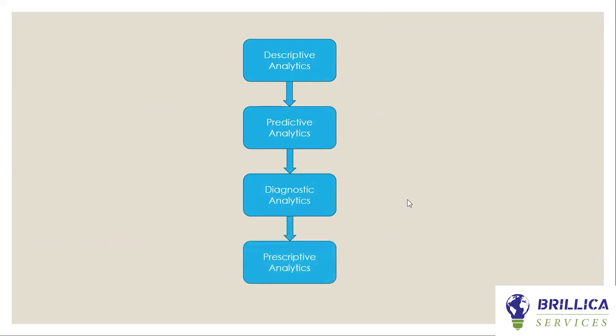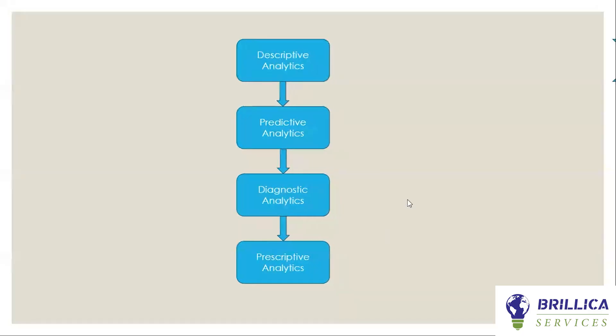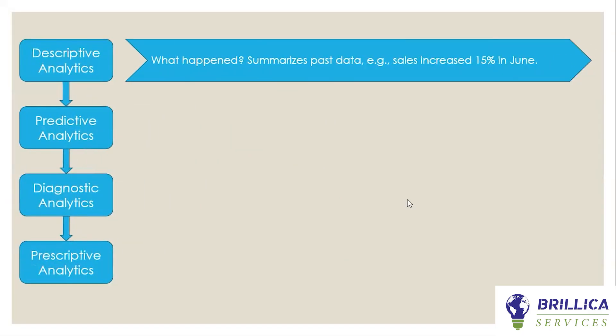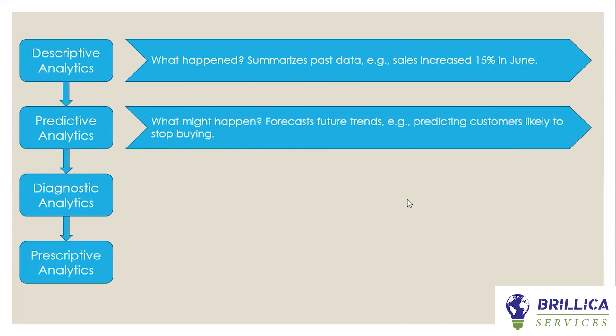Let's talk about each one. In Descriptive Analytics, we talk about historical data — what happened — and we summarize the past data. Example: sales increased 50% in June. In Predictive Analytics, we predict the future — what might happen — and forecast future trends. Example: predicting which customers are likely to stop buying.